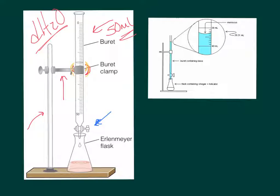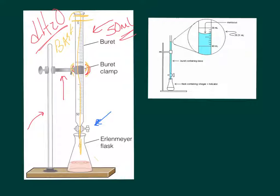Then we're going to add in the base - you want to fill your standardized base in here. We fill it up above the zero mark, then drain it down to right at the top, making sure we drain some through into our waste beaker.